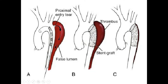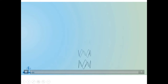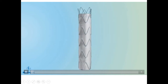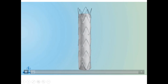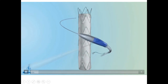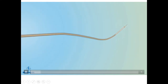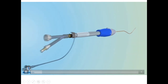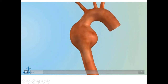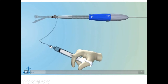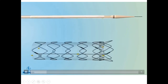The TEVAR procedure involves advancing a wire from the femoral artery, delivering a stented graft over the wire, and using a balloon to expand the stented graft. This covers the proximal entry tear and directs blood through the true lumen, causing compression and thrombosis of the false lumen. The stented graft — a Dacron-covered stent — is delivered through the femoral artery to the level of the dissection and expanded under fluoroscopic guidance.